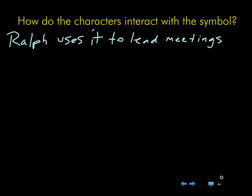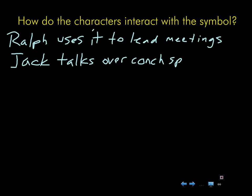Jack kind of doesn't follow it as a control device. Can you tell me two specific ways that Jack does not follow its rules? If someone's specifically holding the conch, Jack just preps and talks all the time. Jack talks over conch speakers. So somebody has the conch and is speaking, and Jack intentionally talks over that person. Can somebody tell me another way in which Jack disrespects, limits, or tries to deny its power?